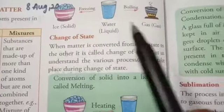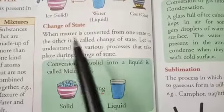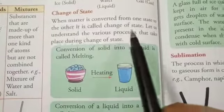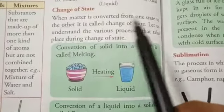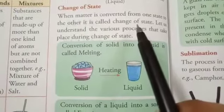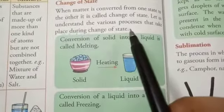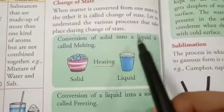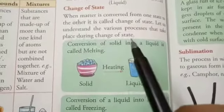Matter can be converted from one state to another state. Now we will study change of state. When matter is converted from one state to another, it is called change of state. Change of state means when matter changes from one state to the other state — we say change of state.